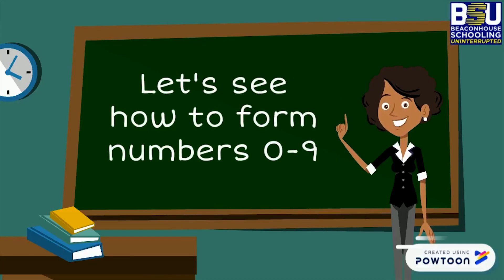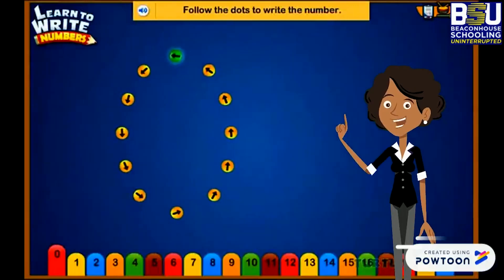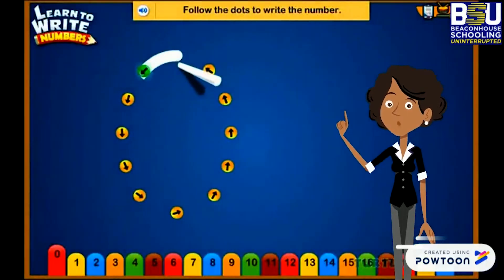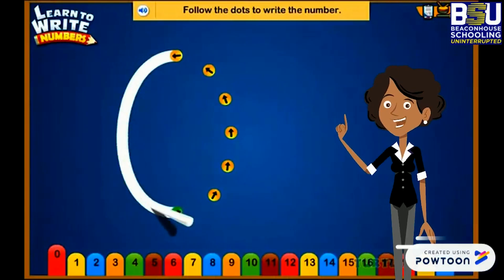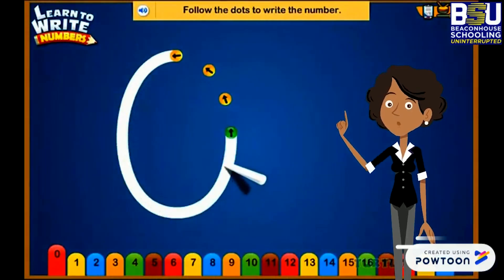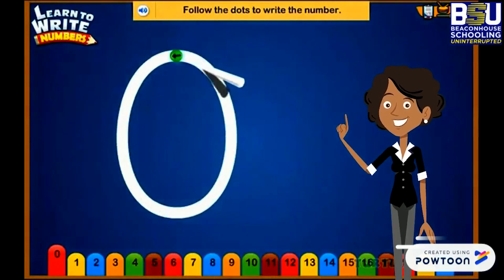Now I will tell you how to form numbers 0 till 9. Let's write number 0. Start from the top. Make a curve down to the left side and then make a curve back up.